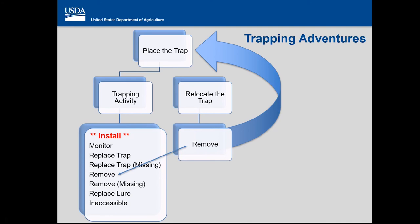When relocating a trap, the last trap activity on the old trap should be 'remove,' and then you place the new trap with the first trapping activity of install. If a point was placed in error and you think it should be deleted, that's something your supervisor should approve and a GIS professional should perform. It's not easy to recover a deleted data point. A remove activity recorded for any reason should not result in actually deleting that symbol from your map — the site symbol should remain.